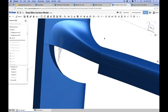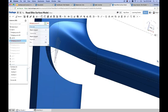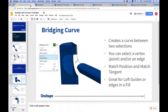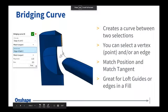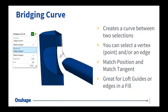The key thing to keep in mind with bridging curve is you define your first and second side, and you define whether you want a tangent transition, match curvature, or just a simple match position. Match position will give you just a straight line curve. Bridging curve is very useful for defining guides in a loft — that's probably one of the more common use cases — or edges for a fill. It's a way of defining a boundary for your loft or fill and controlling the shape created from those commands.